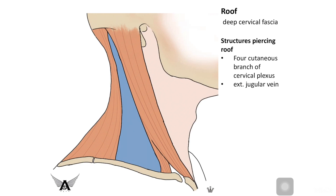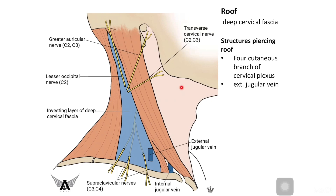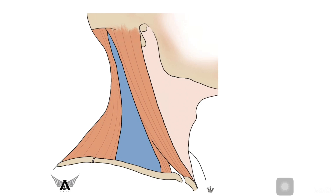The roof is formed by the deep cervical fascia. Certain structures pierce the roof: the four cutaneous branches of the cervical plexus and the external jugular vein. The four cutaneous branches passing through the roof are the transverse cervical nerve, the greater auricular nerve, the lesser occipital nerve, and the supraclavicular nerves.